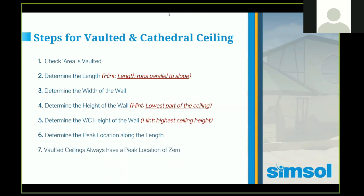For example, if you have a 20-foot length, the highest point in dead center would be 10. Here's a tip: vaulted ceilings always have a peak location of zero. A cathedral ceiling is between zero and the end of the length — in this case, anything between zero and 20. Another tip: when you walk into a room and you see a triangle on a wall, that is your length wall. Find the wall with a triangle and that is your length wall.